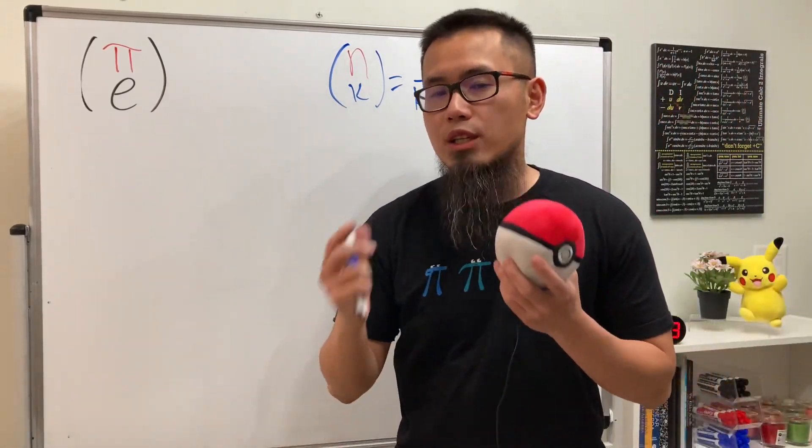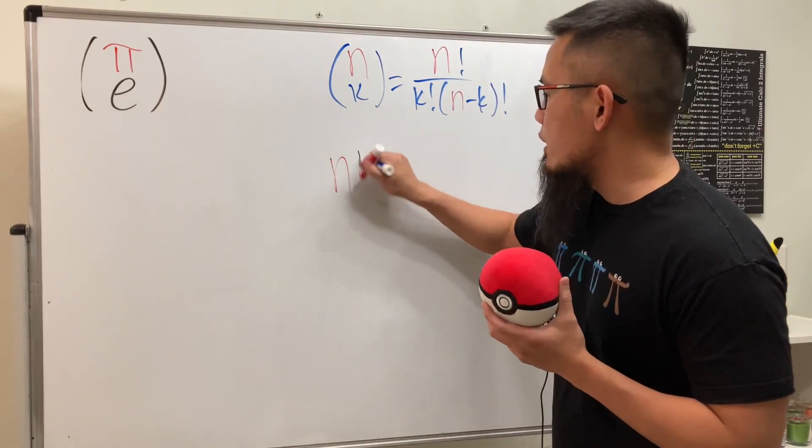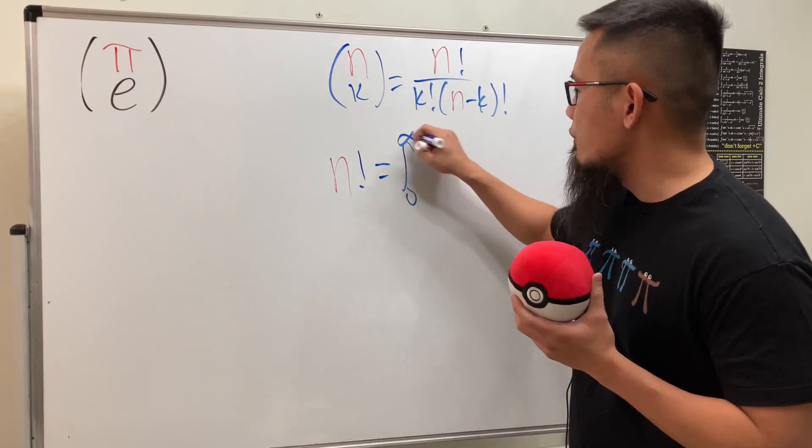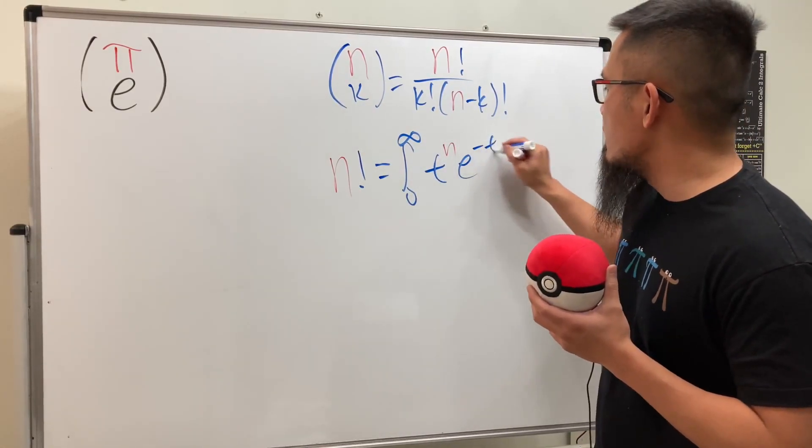Remember, when we have n factorial, we can use the integral definition, either the pi function or the gamma function. Either way, n factorial equals the integral from 0 to infinity of t to the n power times e to the negative t dt.